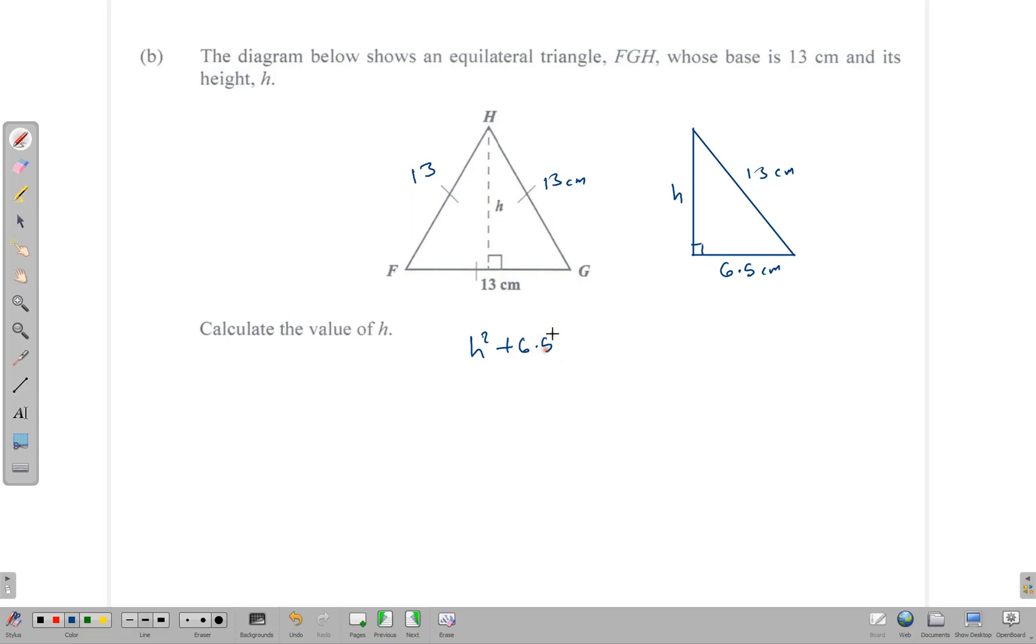Using Pythagoras's theorem, we can calculate the value of H. So using Pythagoras's theorem, H squared plus 6.5 squared is equal to 13 squared. That means H squared is now equal to 13 squared minus 6.5 squared.